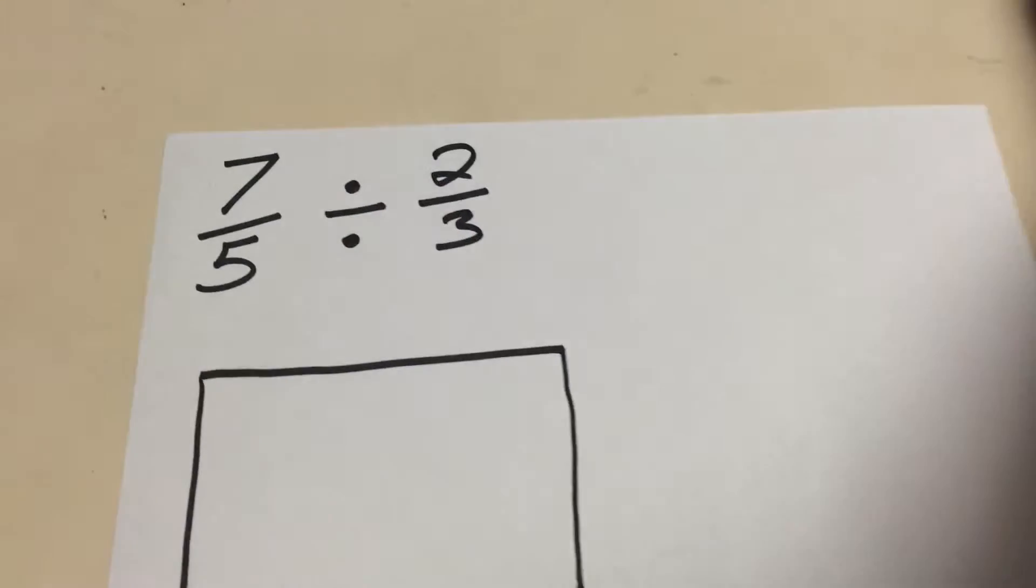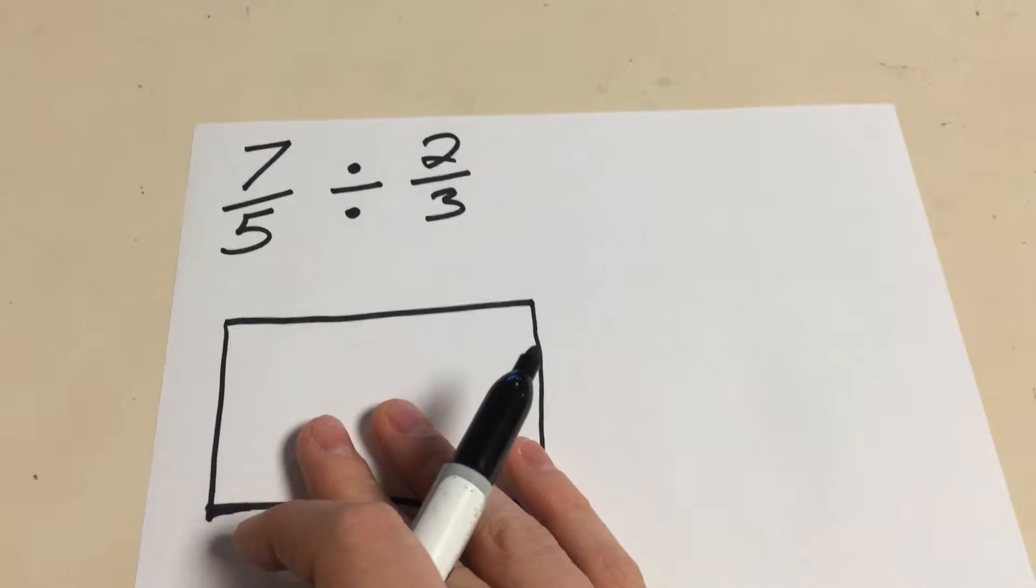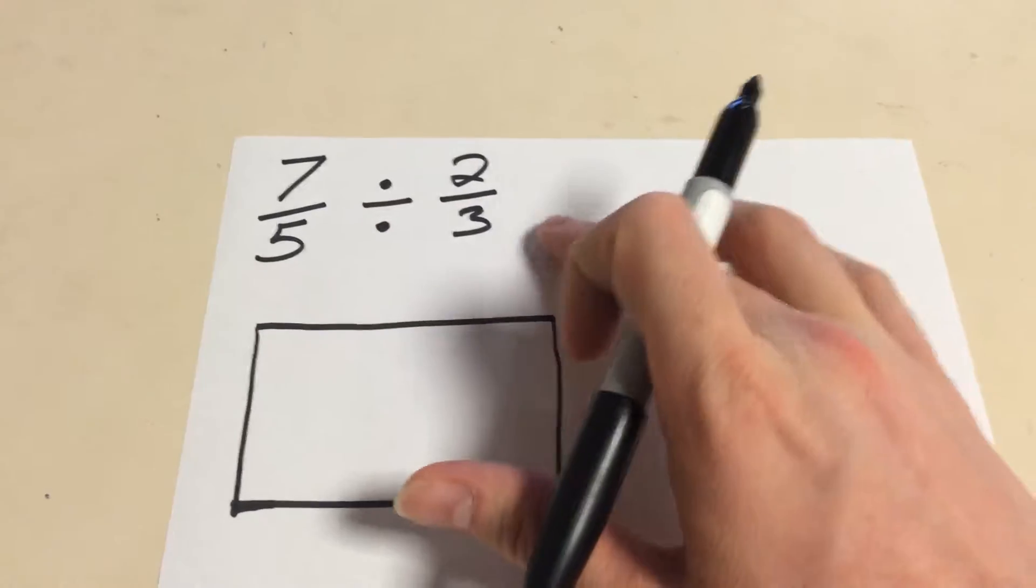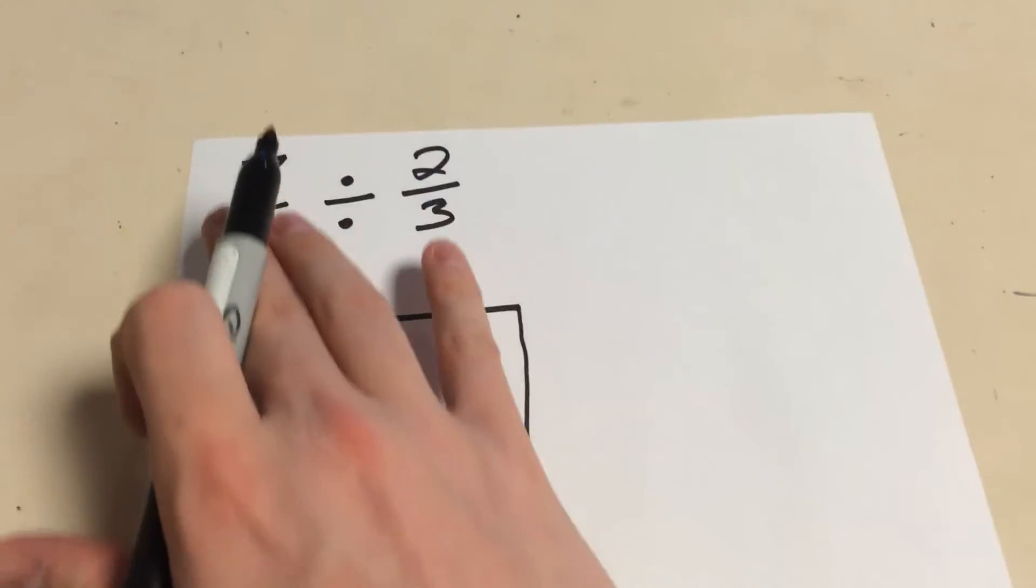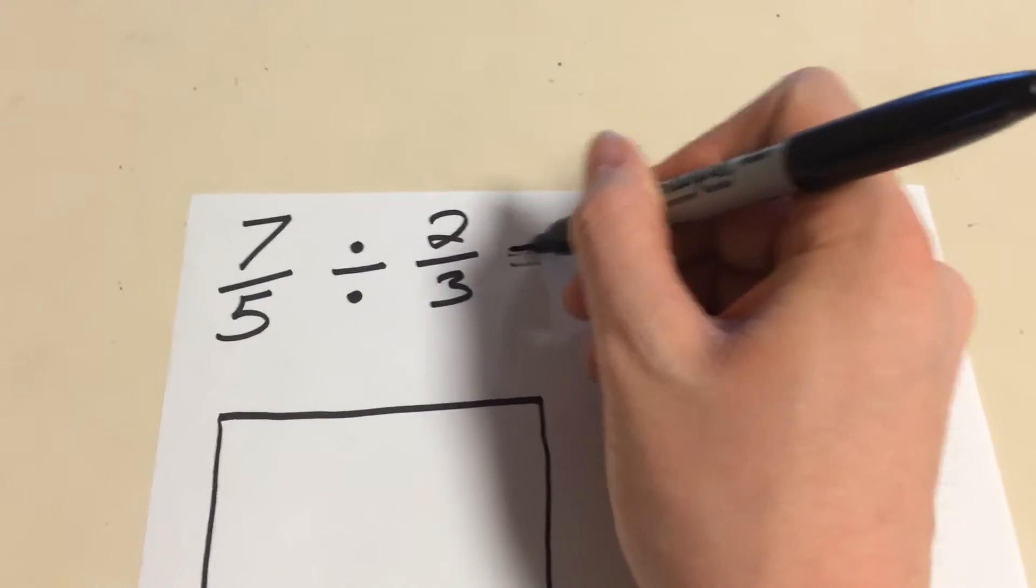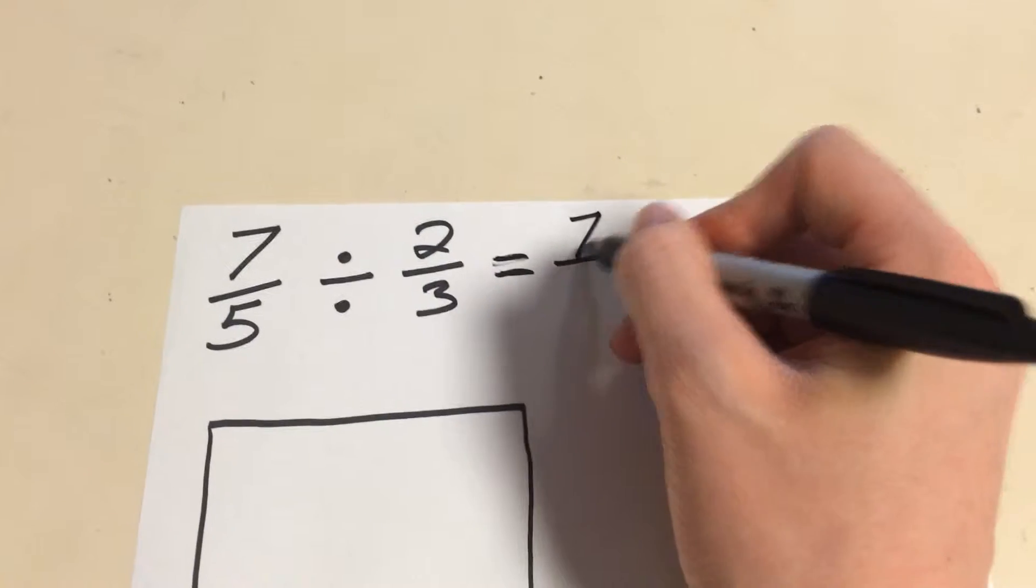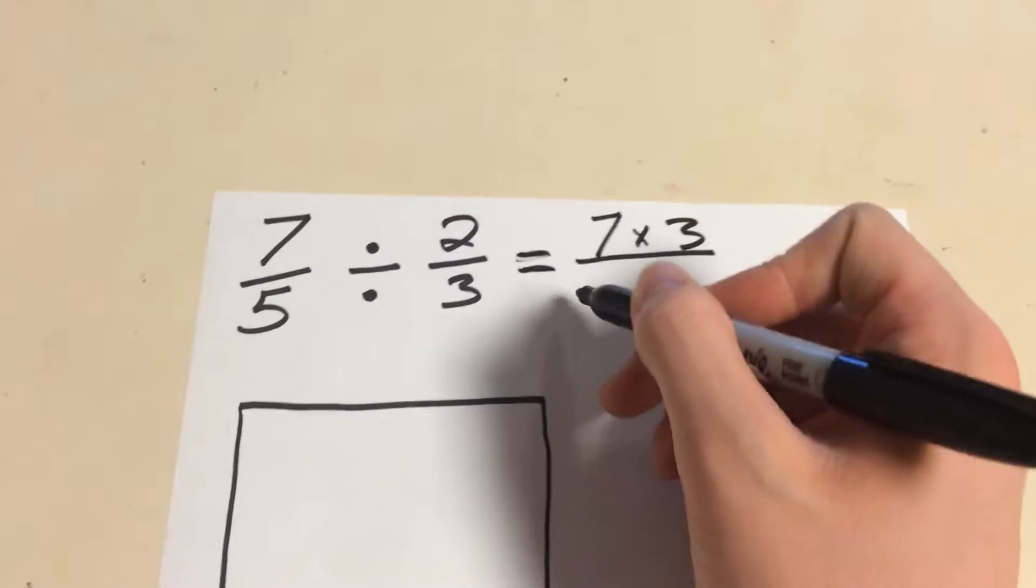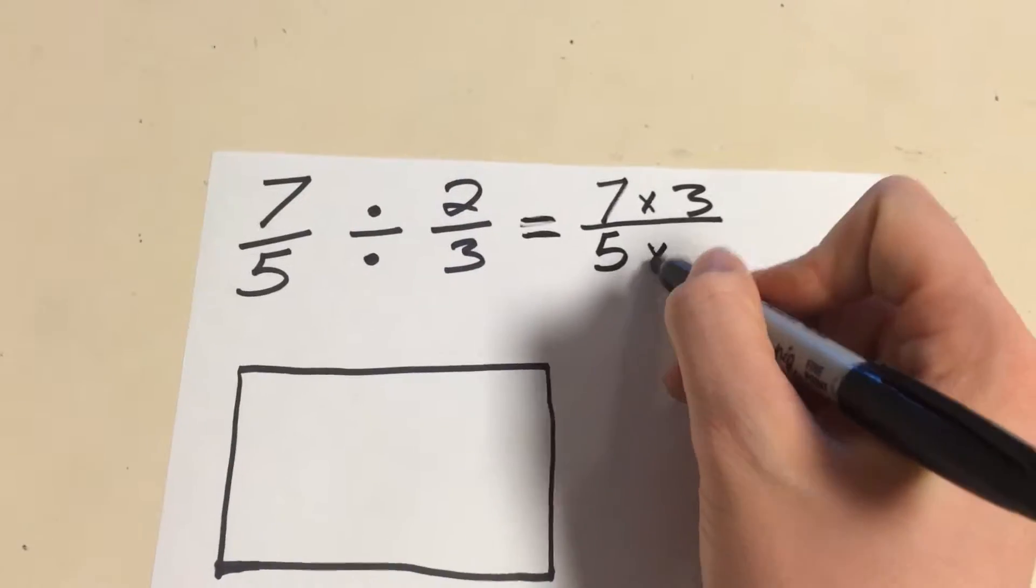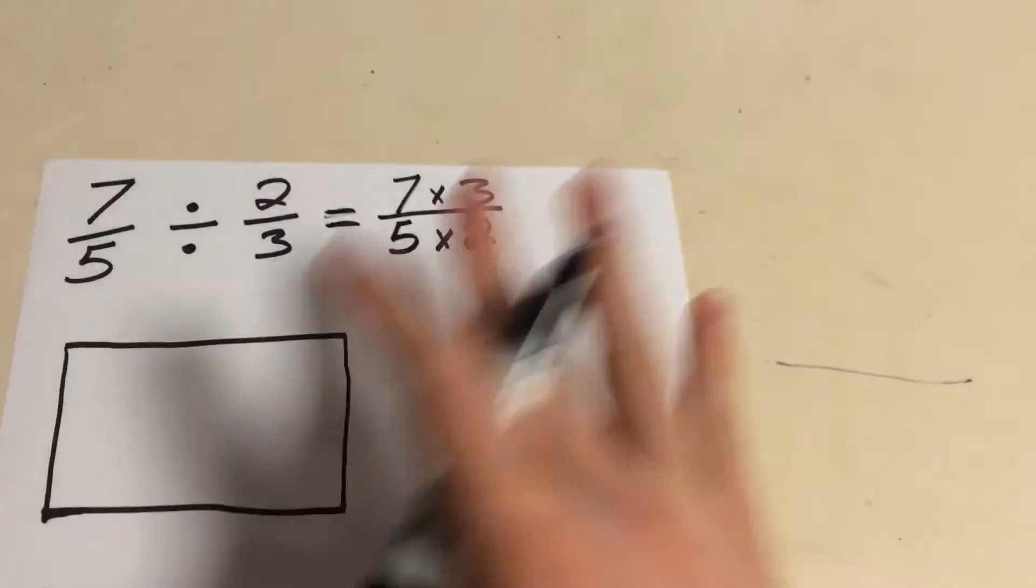This will be a fraction division video. We're trying to divide 7 fifths by 2 thirds. Our final answer is going to be 7 times 3 over 5 times 2, and we're going to prove how we get there through math.